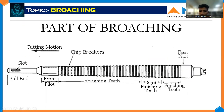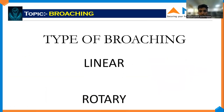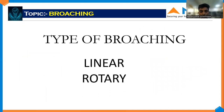Cutting motion will be right to left — this is the cutting motion. Types of broaching: linear or rotary. In linear broaching, the tool is fixed and the workpiece is also fixed, but the motion will be in the tool only, not in the workpiece. That is called linear broaching.